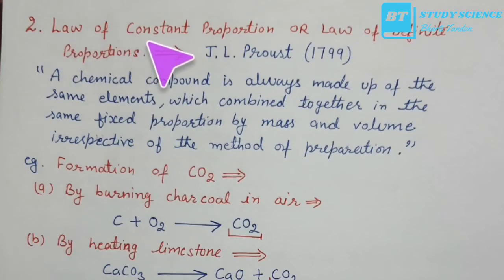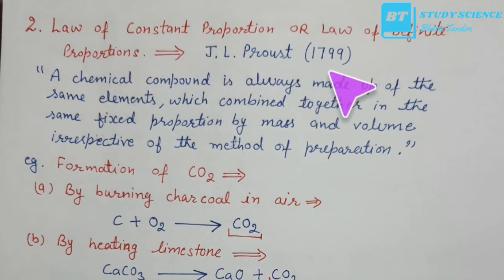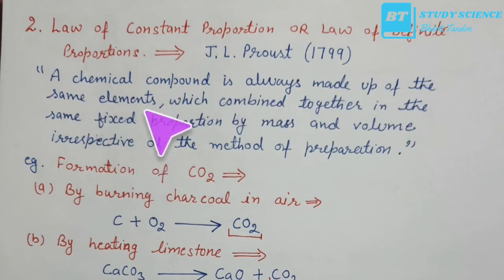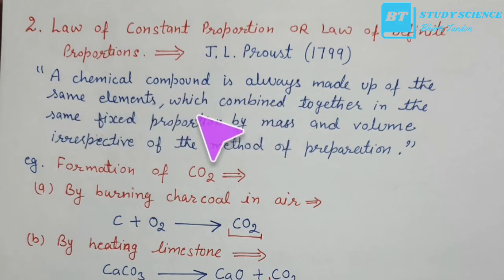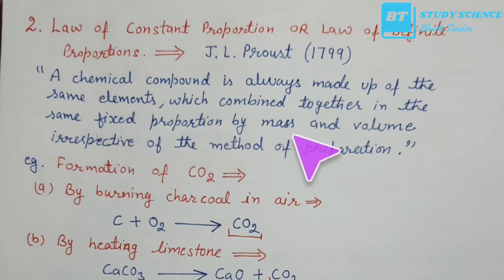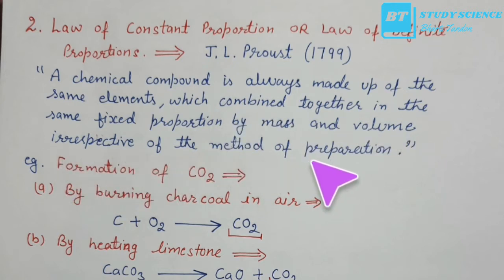The second law is the law of constant proportion, or law of definite proportion, given by J.L. Proust in 1799. A chemical compound is always made up of the same elements, which combine in the same fixed proportion by mass, irrespective of the method of preparation.